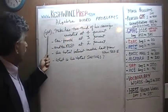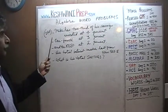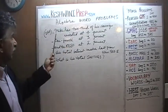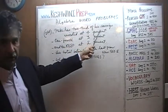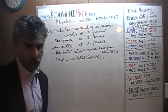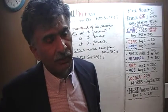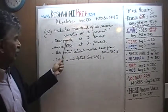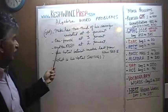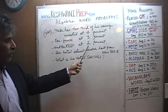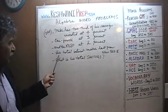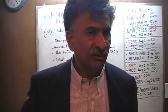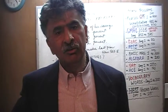Problem 144 is already on the blackboard. We are told that Mike has two-thirds of his savings invested at 4%. One-fourth at 3%. And he has put the rest in a different account where he gets 2%. We are further told that his total interest income last year was $860. Based on that, what is his total savings?